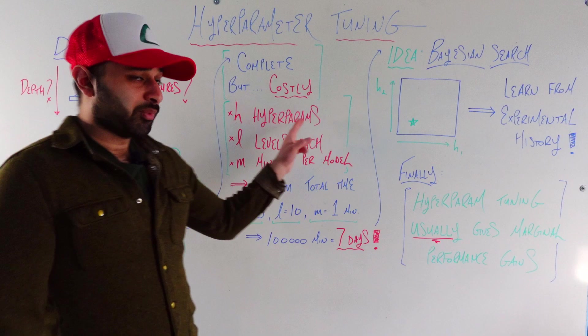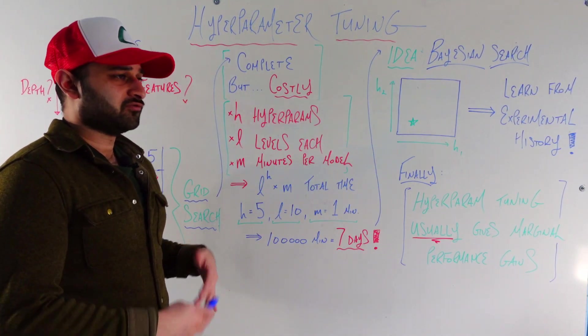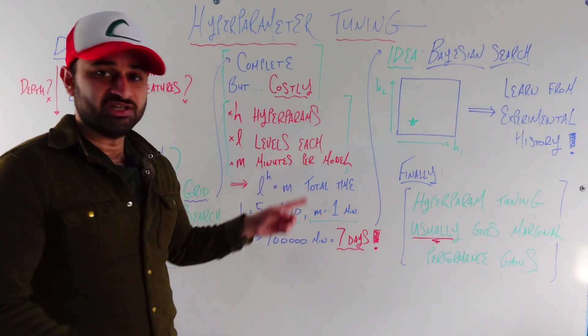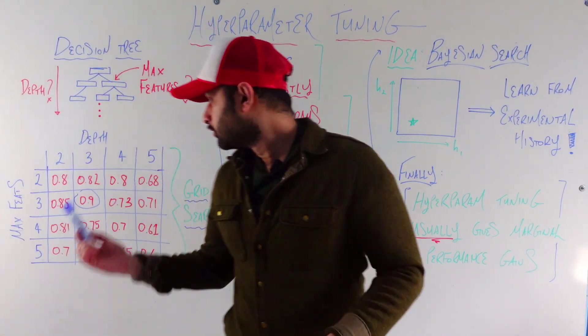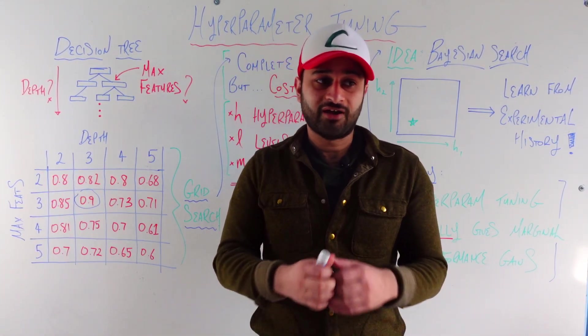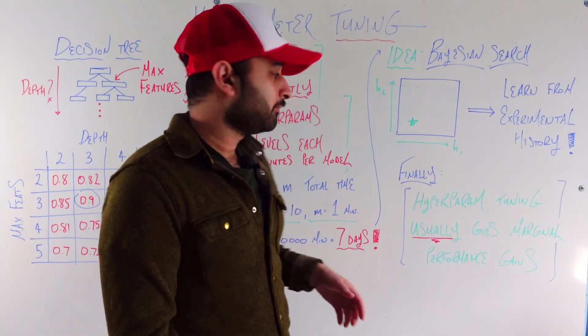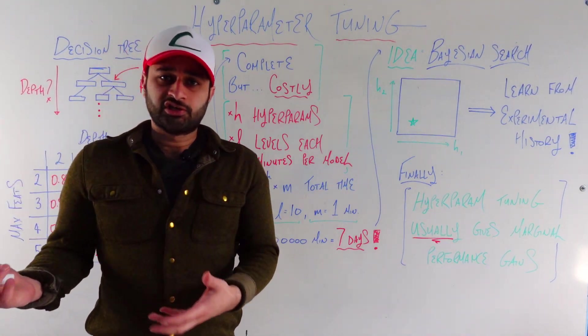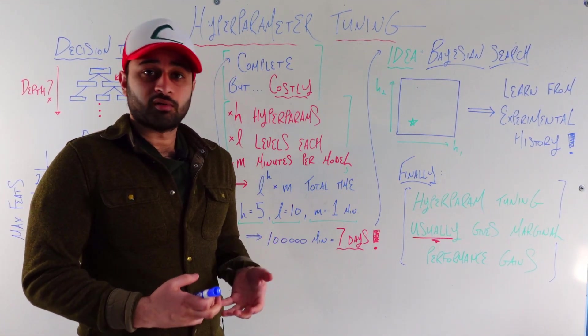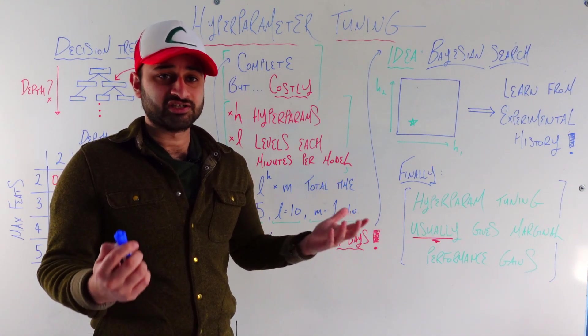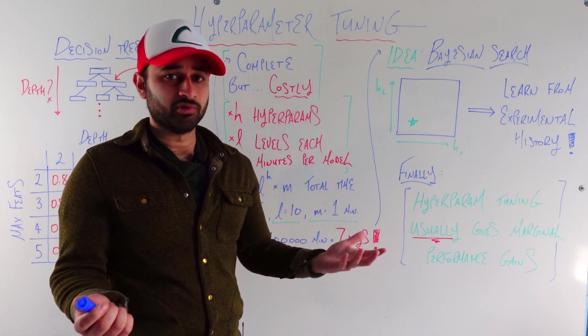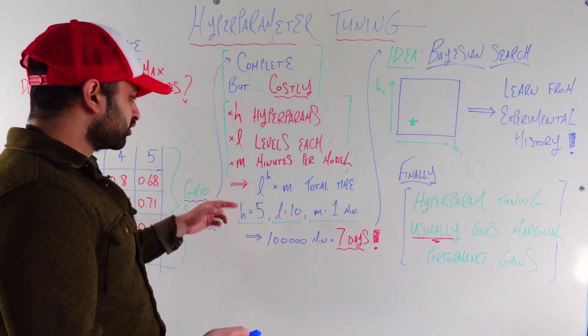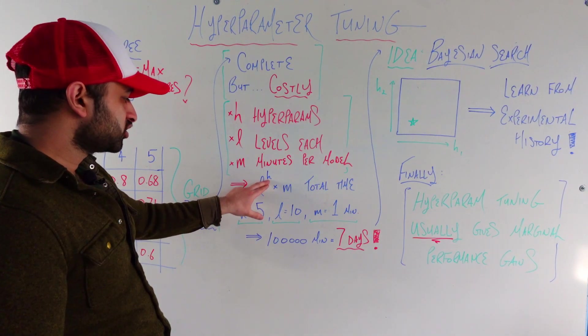So imagine that you have h hyperparameters. Here we just had 2, but in general you could have like 5, 10, even more sometimes. And let's say that you're going to give l levels to each hyperparameter. So here we gave 4 levels to each hyperparameter, but in general you could have arbitrarily many levels for each hyperparameter to take. And let's say that one model takes you m minutes to train. With decision trees it could be fast, but if you are training random forests or neural networks instead, now each model takes a serious amount of time to train, so you really have to think about how long this is going to take. So what's the total amount of time to run this whole grid search? Well it's going to be l to the power of h times m.